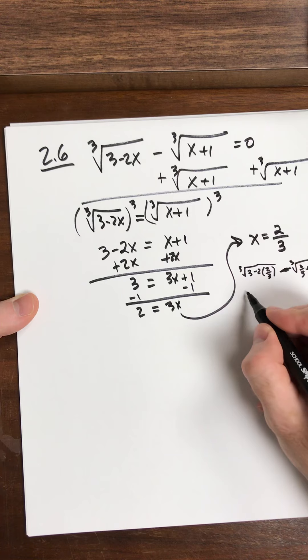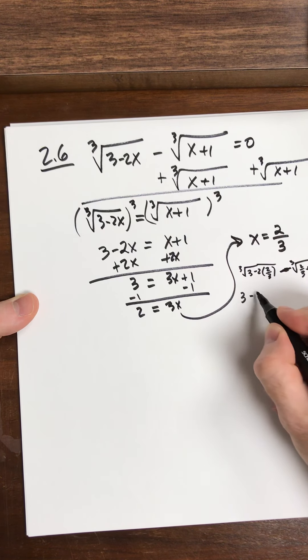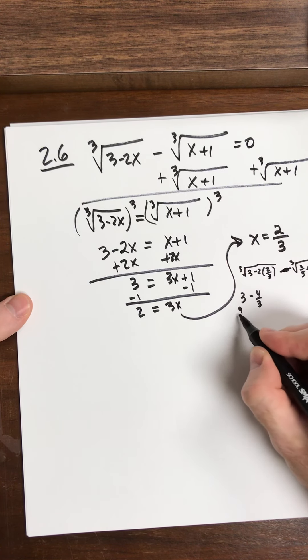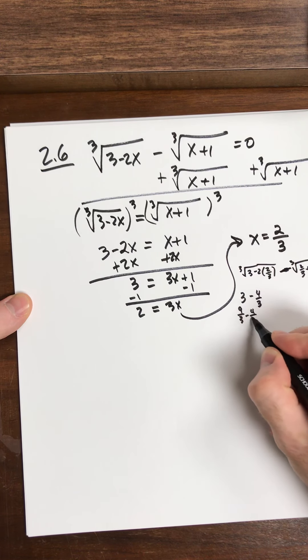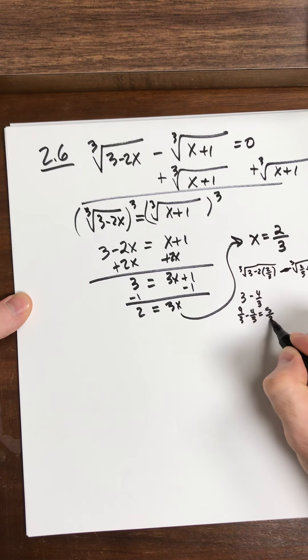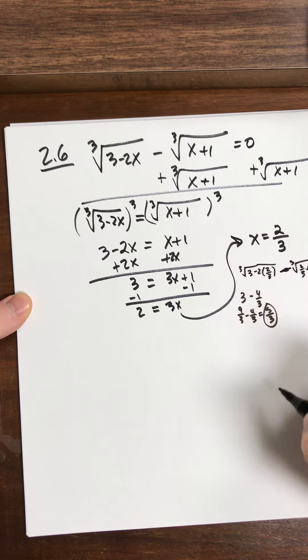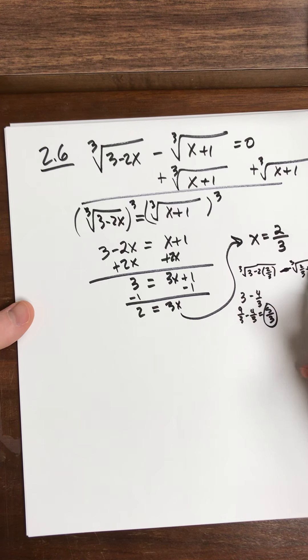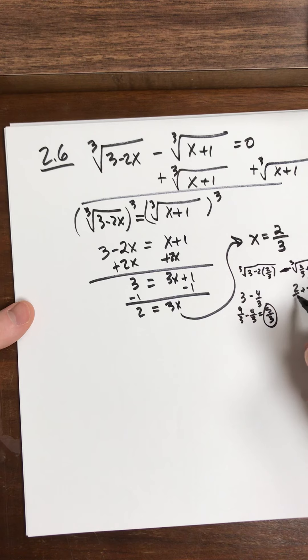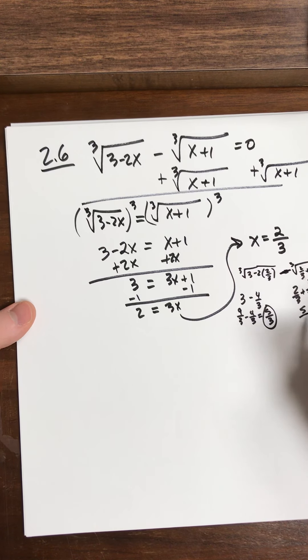So this is going to be what? That inside there is going to be 3 minus 4 over 3. So that's really 9 over 3 minus 4 over 3, which is 5 thirds inside of the cube root. Over here, 3 over 3 plus 2 over 3 is still 5 thirds.